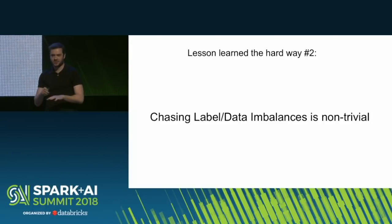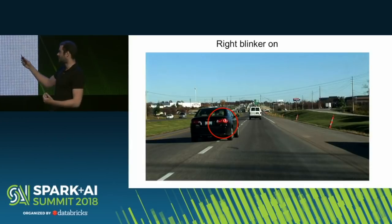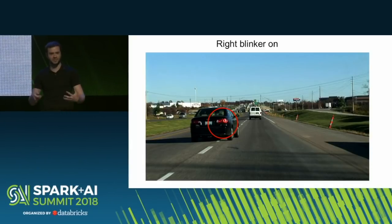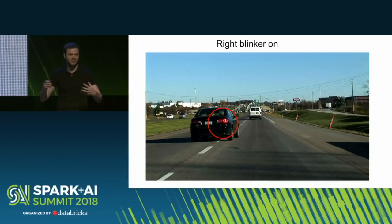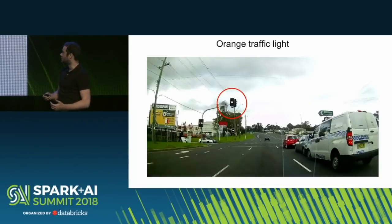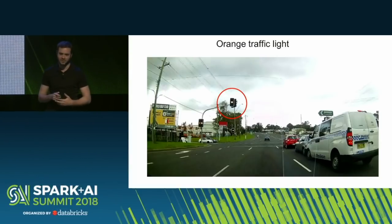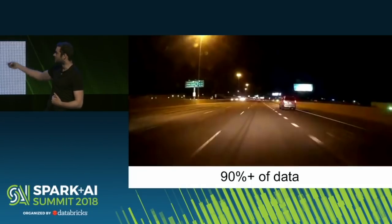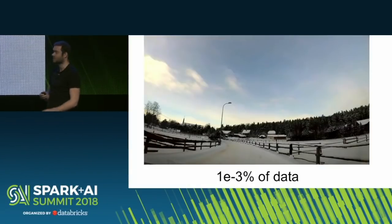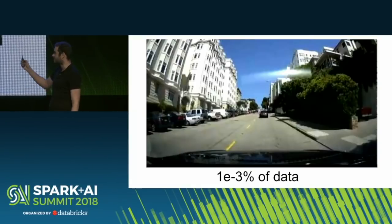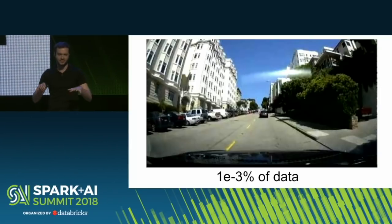The next huge challenge is that your data imbalances need to be in check. For example, if we're trying to recognize whether a car has a blinker on, blinkers are almost always off. If you naively sample data at random, you get very few examples of blinkers actually being on, so you have to worry about data imbalance and chase those rare examples. Orange traffic lights are another example — we have huge annotations for red and green, not as many for orange, so the network struggles. It's not just about labels; it's also about the data. Most of our data looks like highway driving going forward, and if you bring a network trained on that to a different environment or to San Francisco, that's not going to work well. You need quite a bit of data to have broad distribution coverage.